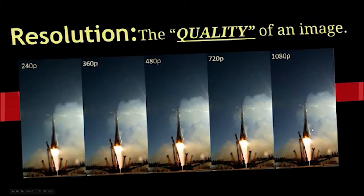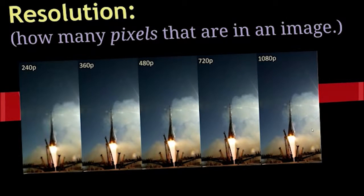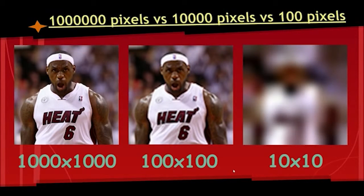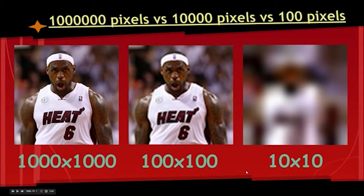You know this from YouTube — how many pixels are in that image? Increasing the pixel count increases the quality, and that's also called resolution. Low res looks very poor; high res looks very good. A hundred pixels of LeBron, 10,000 pixels of LeBron, or a million pixels of LeBron — which looks better? Obviously, the higher resolution image, because it has more pixels.